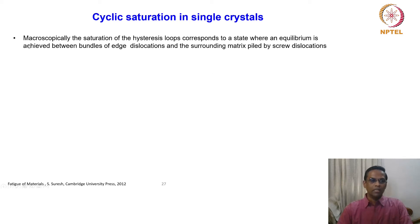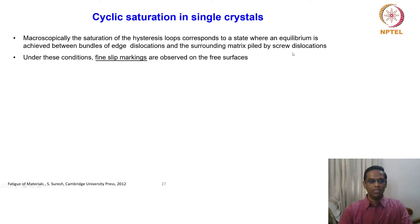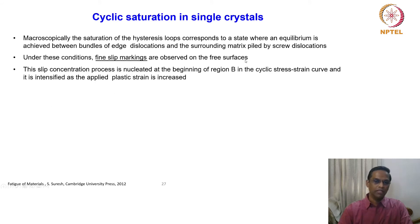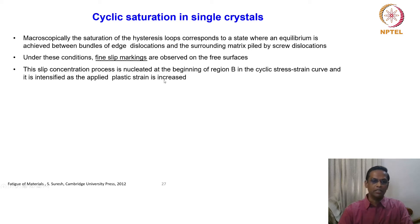In single crystals subjected to cyclic deformation under strain-controlled mode, the hysteresis slope corresponds to the state where equilibrium is achieved between bundles of edge dislocations and the surrounding matrix filled by screw dislocations — this is one hypothesis. Under these conditions, fine slip markings are observed on the free surfaces. This slip concentration process is nucleated at the beginning of region B in the cyclic stress-strain curve and is intensified as the applied strain is increased.